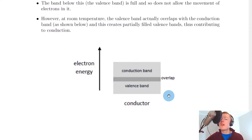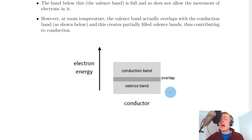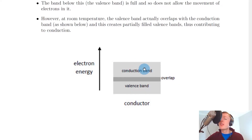This means that the completely filled valence band has actually introduced some new electrons into the conduction band since they are overlapping. And because the conduction band is not completely full, electrons can move about and conduct in the conduction band. Remember, if the conduction band is full that means no electrons can move because there's no space for them to move in that band.